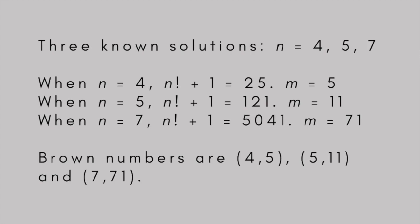The ordered pairs that satisfy the equation are known as Brown numbers. So, the known Brown numbers are (4, 5), (5, 11), and (7, 71).